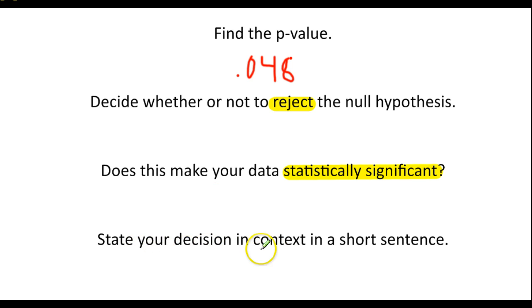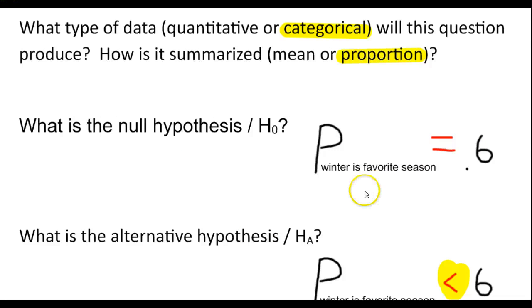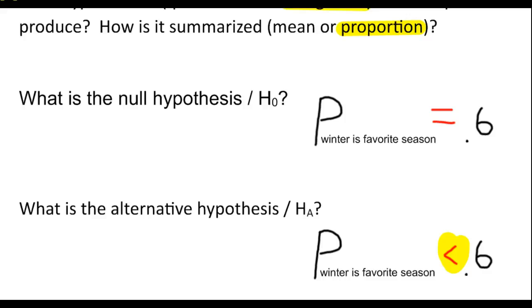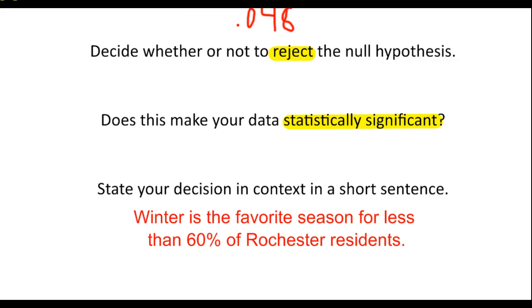Last part says state your decision in context in a short sentence. Well, if we had to describe what we found, we found that it is unlikely with our data. We have statistically proven that winter is not the favorite season for 60% of Rochester residents. It is, in fact, less than 60%. So if we were to word this a little more carefully, we might say something like this. Winter is the favorite season for less than 60% of Rochester residents. We didn't say anything like it was 44% or tell people what our sample said. We just said that it is less than 60%. That's all we were looking to find.